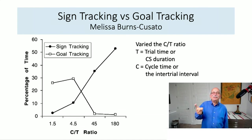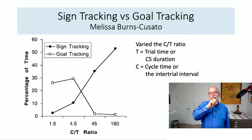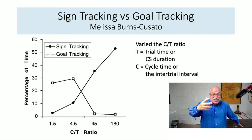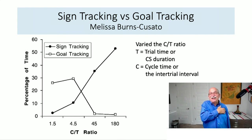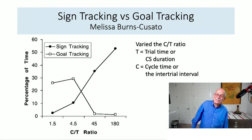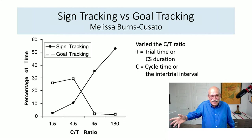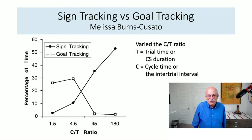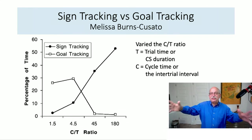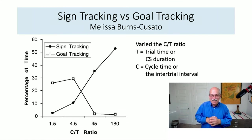It wasn't the end of the story for us, because we also measured goal tracking. What you see is that low CT ratios result in substantial levels of goal tracking, and goal tracking decreases as the CT ratio increases. So if you don't see a conditioned response, it could be because you're not measuring the right thing. If you measure other types of behaviors, you could get a pattern of results entirely contrary to your theory — in this case, rate expectancy theory.